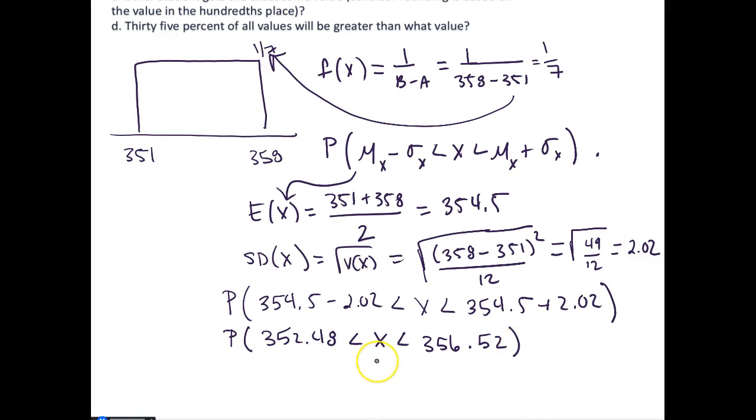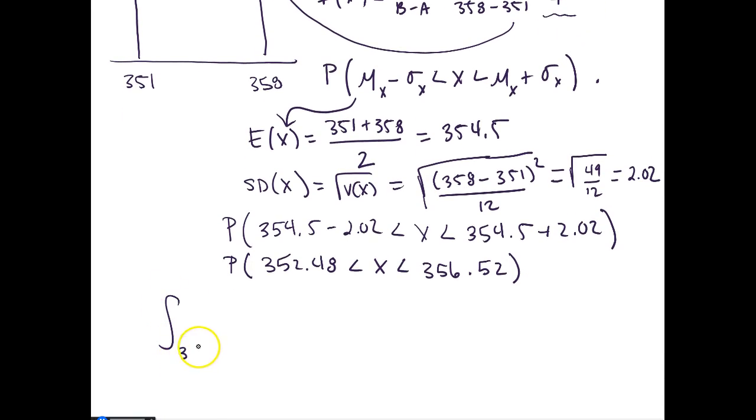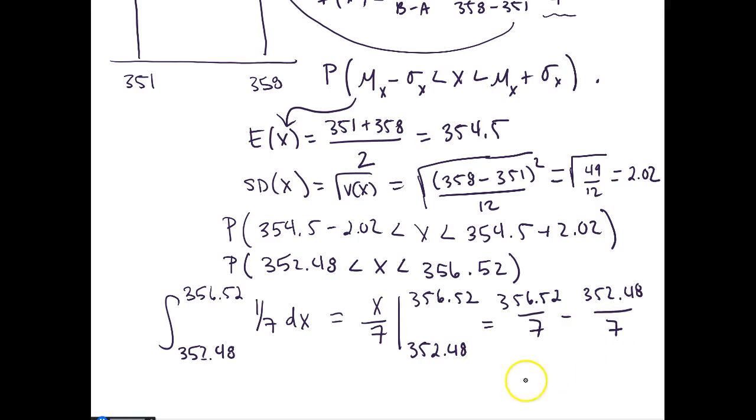So this is then equal to the probability that X is between 352.48 and 356.52. We can use our probability density function: we integrate from the lower bound of 352.48 up to the upper bound of 356.52 of our PDF. This equals X/7 evaluated from the lower bound to the upper bound.